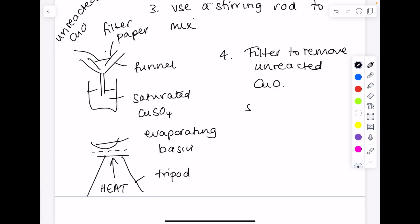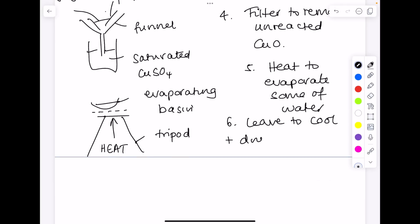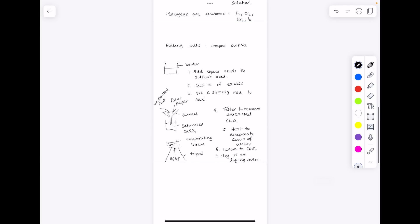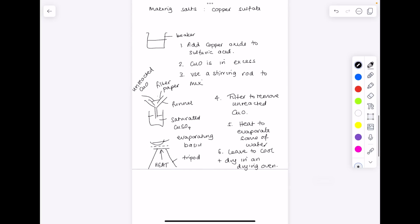So in step 5, heat to evaporate some of the water. Leave to cool and dry. Be specific with that drying. I'm going to say in a drying oven or you could say on a warm shelf. That's how I'm going to guarantee myself 5, 6 marks here.